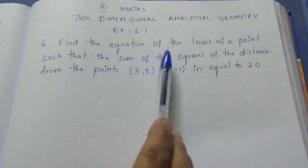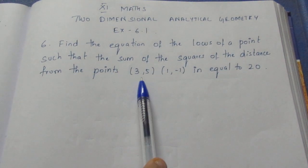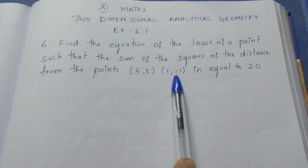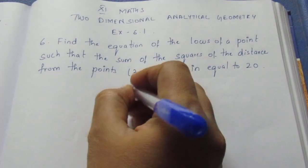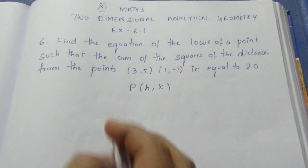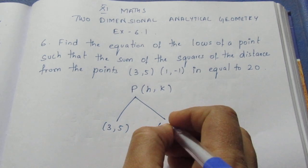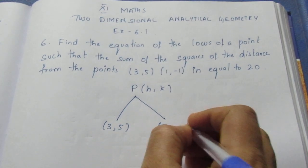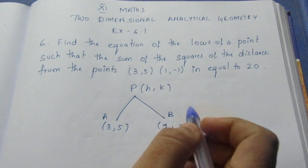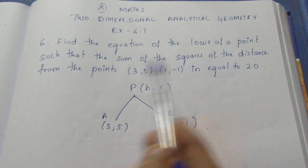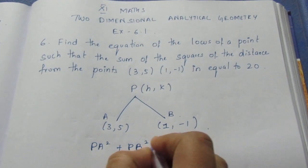Let's see. Find the equation of the locus of a point such that the sum of the squares of the distances from the point equals 20. We write the locus of point P. The two given points are (3, 5) and (1, -1). We write the condition: PA² + PB² = 20.